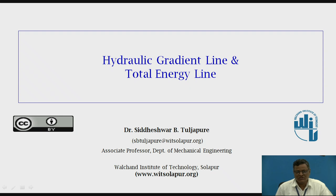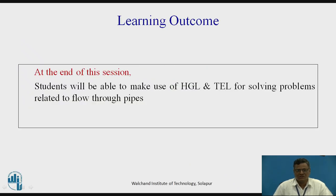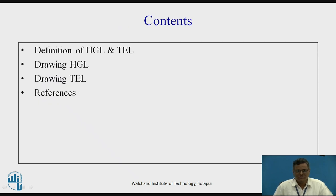In this session, we are going to cover the topic: hydraulic gradient line and total energy line. The learning outcome — at the end of this session, students will be able to make use of HGL and TEL, which are hydraulic gradient line and total energy line, for solving problems related to flow through pipes. The contents are the definition of the hydraulic gradient line and total energy line, how to draw the hydraulic gradient line, the drawing of the total energy line, and then the references.